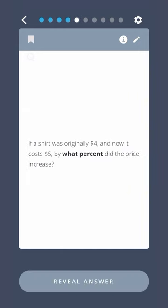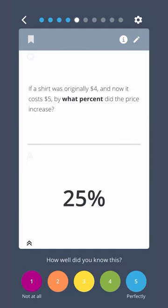If a shirt was originally $4 and now it costs $5, by what percent did the price increase? 25 percent.